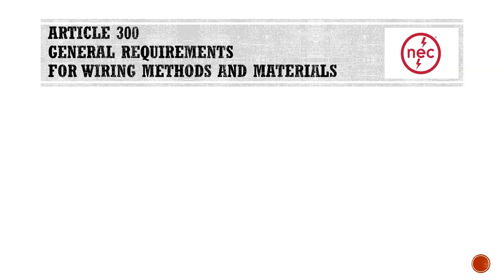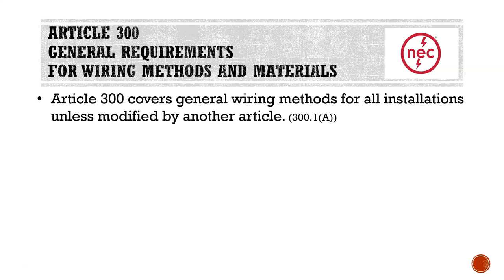Article 300 is general requirements for wiring methods and materials, starting on page 134 of a 2017 NEC codebook. Article 300 covers general wiring methods for all installations, unless modified by another article. You may notice this sounds really broad — Article 300 is a very broad article. It bounces around to a lot of different topics and ideas, and it's kind of a conglomerate of a lot of different requirements.